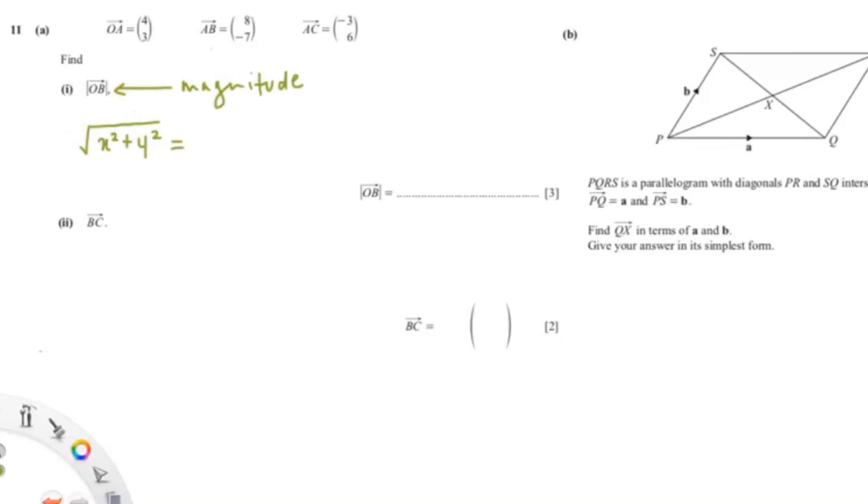Since OB is not given in the information above, we can find OB using these two vectors. So we can break AB into OB minus OA.